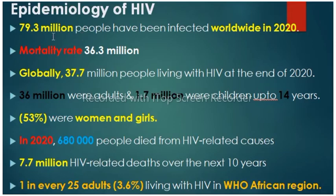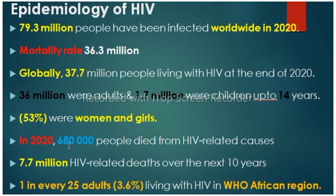Regarding worldwide epidemiology: 79.3 million people have been infected worldwide as of 2020, with a death toll of 36.3 million. Globally, 37.7 million people were living with HIV at end of 2020 — 36 million adults and 1.7 million children up to 14 years. 53% of those infected were women and girls. In 2020, 680,000 people died from HIV-related causes, with 7.7 million HIV-related deaths projected over the next 10 years. 1 in every 25 adults — 3.6% — in the WHO African region is living with HIV.